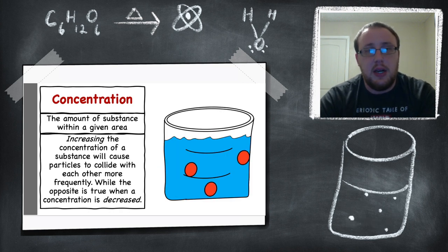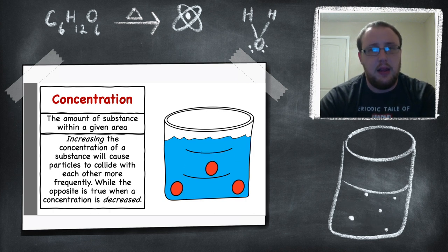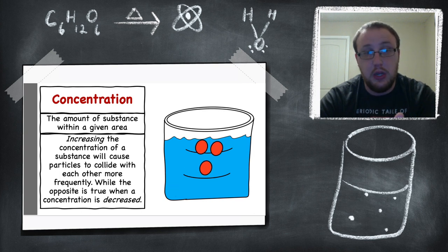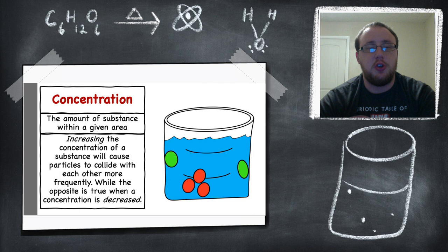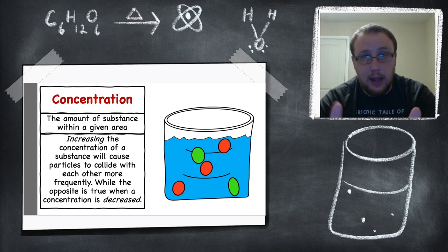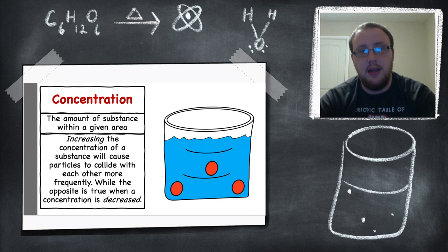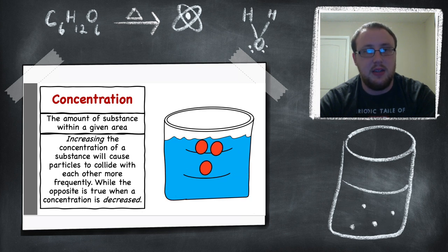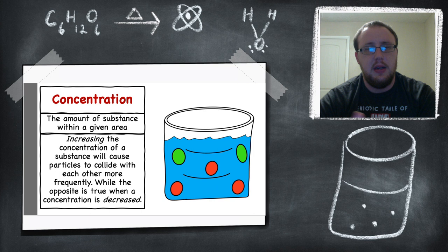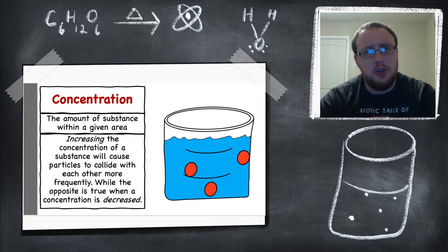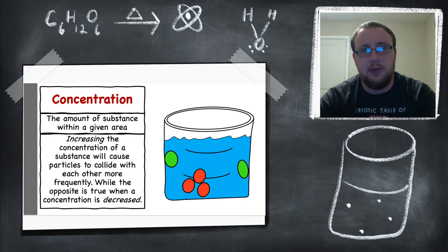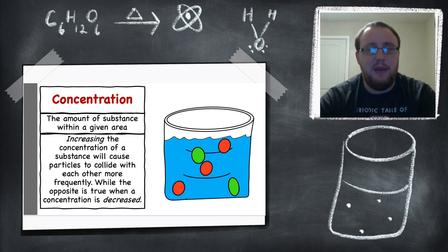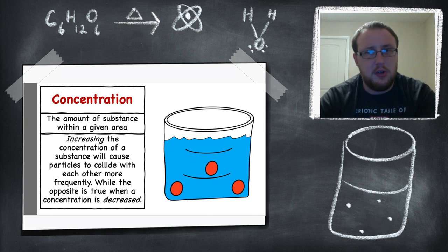Concentration is another factor — it's the amount of substance in a given area. Think of sweet tea: the more sugar you add, the more concentrated the sugar is per gallon of tea. Increasing the concentration of a substance will cause particles to collide with each other more frequently. The more sugar in the tea, the more likely those sugar molecules are to come in contact with each other. Decreasing the concentration will make it less likely that those molecules come in contact with each other.